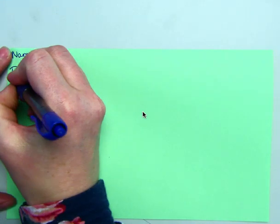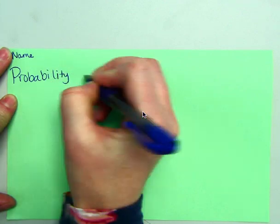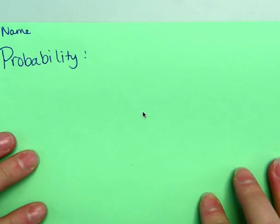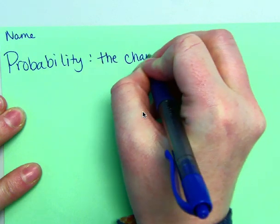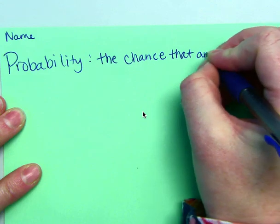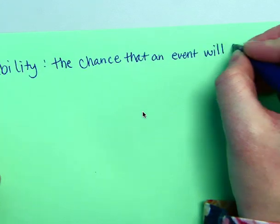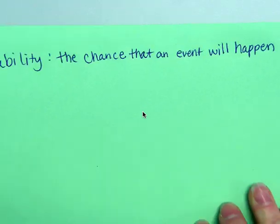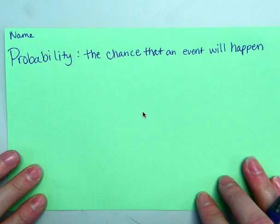And we are going to write a couple of things down about probability. So the first thing is what probability is. So probability is the chance that an event will happen.